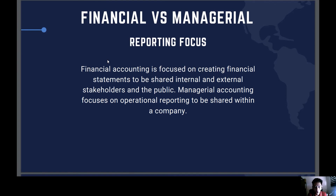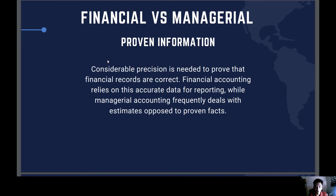Regarding reporting focus: financial accounting is focused on creating financial statements to be shared with internal and external stakeholders and the public. Managerial accounting focuses on operational reporting to be shared within the company. Moving on to proven information: considerable precision is needed to prove that financial records are correct. Financial accounting relies on accurate data for reporting, while managerial accounting frequently deals with estimates as opposed to proven facts.